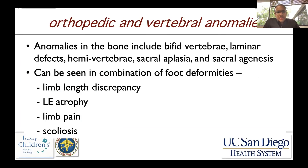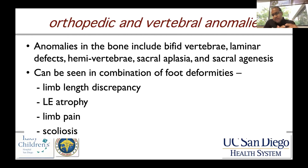Bony anomalies associated with tethered spinal cord include bifid vertebrae, laminar defects, hemivertebrae, sacral aplasia, and sacral agenesis — often seen in combination with foot deformities. Many consultations come from pediatric orthopedic surgery colleagues for kids presenting with limb length discrepancies, lower extremity atrophy, toe walking, limb pain, and scoliosis, which are often harbingers of occult spinal dysraphism.